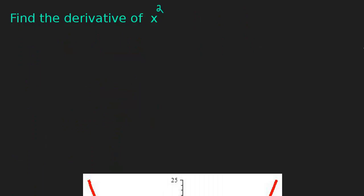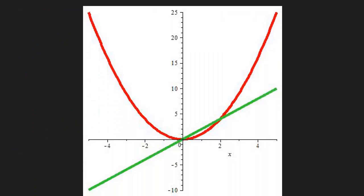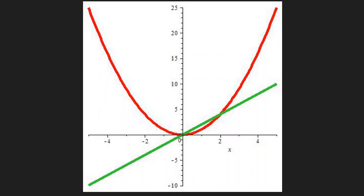So let me show you a picture of what's happening. So here in red is x squared, the original function. And in green is its derivative, 2x.